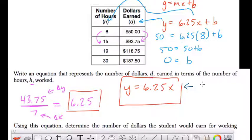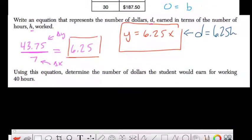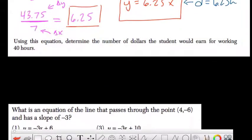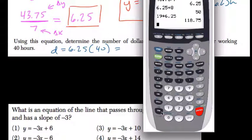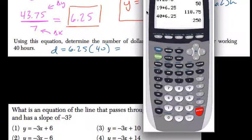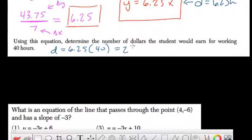So they say D, number of dollars earned, equals 6.25 times hours—the hours you worked. Using this equation, determine the number of dollars the student would earn working for 40 hours. So D equals 6.25 times 40. And what does that equal? Well, 40 times 6.25 is $250. Make sure you use the equation to represent your work.